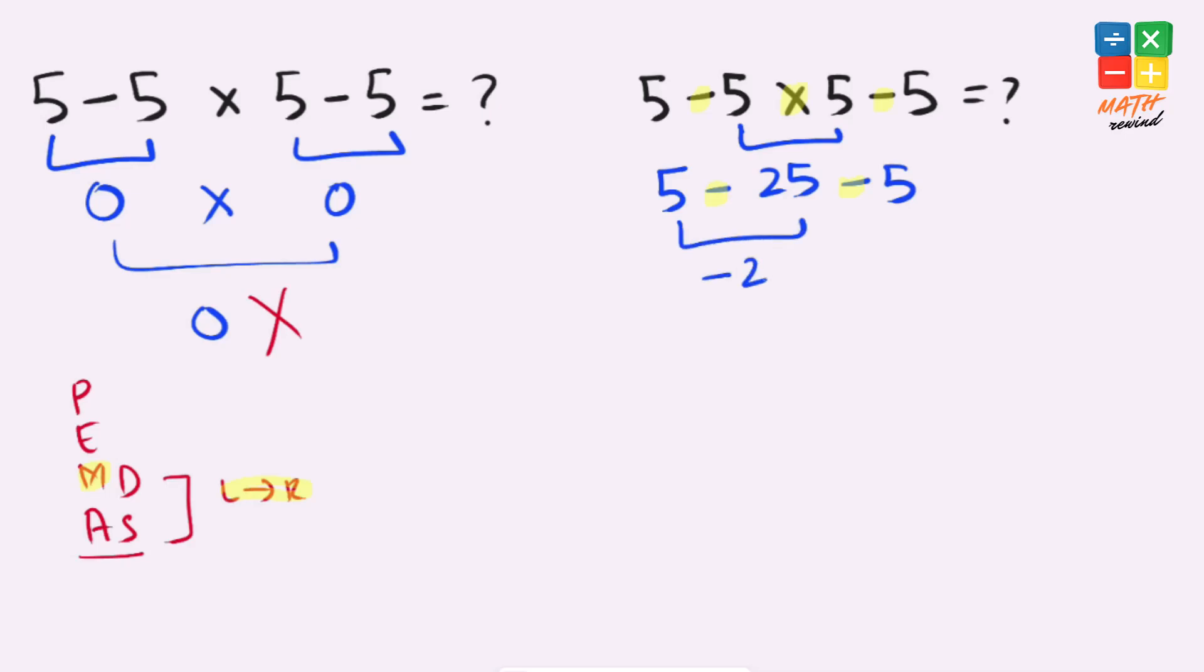5 minus 25 equals minus 20, minus 5, which equals minus 25. This is the right answer to this problem.